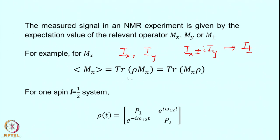This is a principle which is generally valid and one can easily verify it by taking different kinds of rho and mx matrices. Now let us take an example for a one-spin system with i equal to half. It has two energy levels, so rho(t) will be a 2×2 matrix. We have two populations and one coherence between the two energy levels: e to the i·omega-12·t and e to the minus i·omega-12·t, since omega-21 equals minus omega-12 — essentially the complex conjugate.